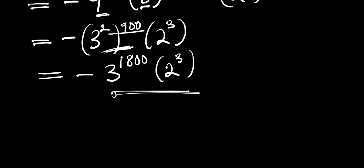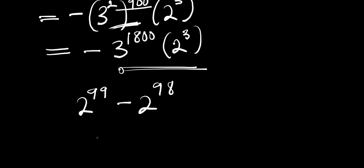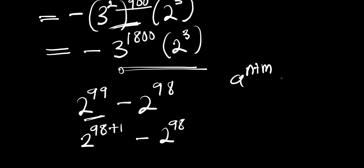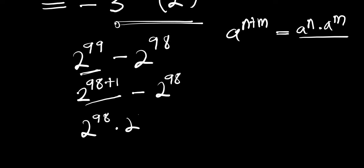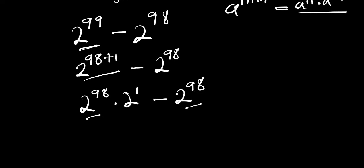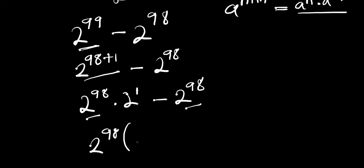Now let's consider a similar problem: 2 to the power of 99 minus 2 to the power of 98. Using the same approach, we rewrite this as 2 to the power of 98 plus 1 minus 2 to the power of 98. Applying the identity a to the power of n plus m equals a to the power of n times a to the power of m, we get 2 to the power of 98 times 2 to the power of 1, minus 2 to the power of 98. We factor out 2 to the power of 98.